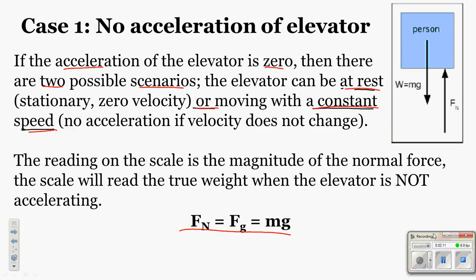Here is case number one — there are going to be six that we talk about. Case number one is where there is no acceleration of the elevator. If the acceleration of the elevator is zero, there are only two possible situations: situation one, the elevator is at rest and the object is at rest; or the elevator is moving at a constant speed. In those two situations there is no acceleration, so there's no net force. That means FN is equivalent to FG. As long as we have the mass of the object, we can find FG and therefore FN.